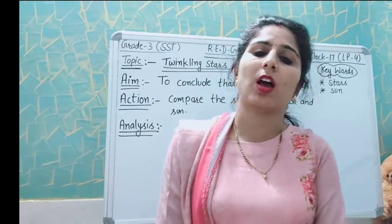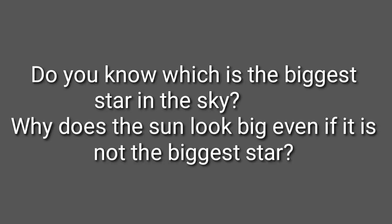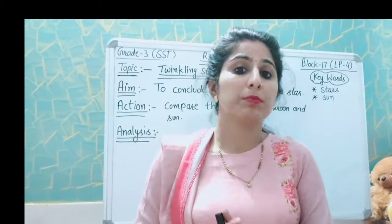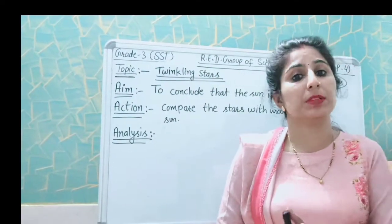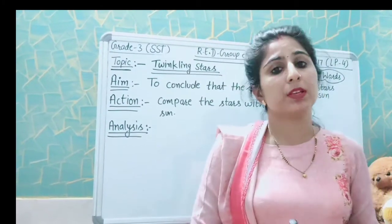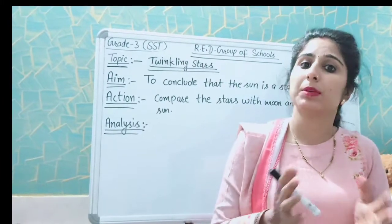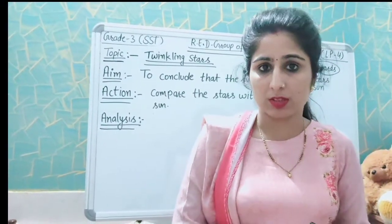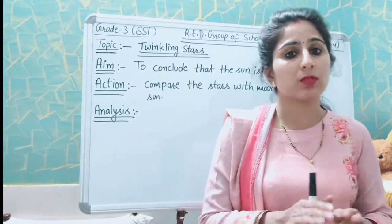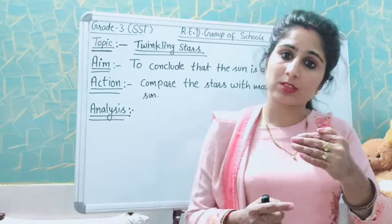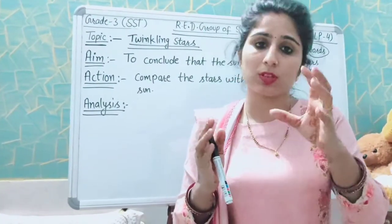Now it is time for the higher order thinking question. Do you know which is the biggest star in the sky? Why does the sun look big even if it is not the biggest star? The answer is because the sun is closer to the earth, while other stars are far away from the earth.